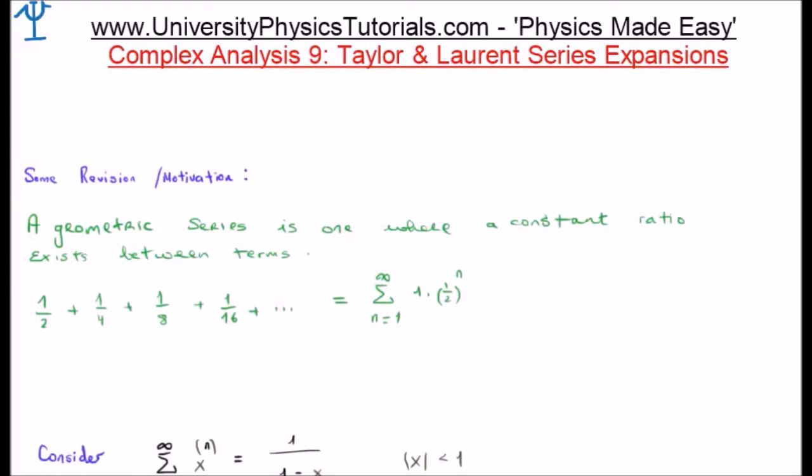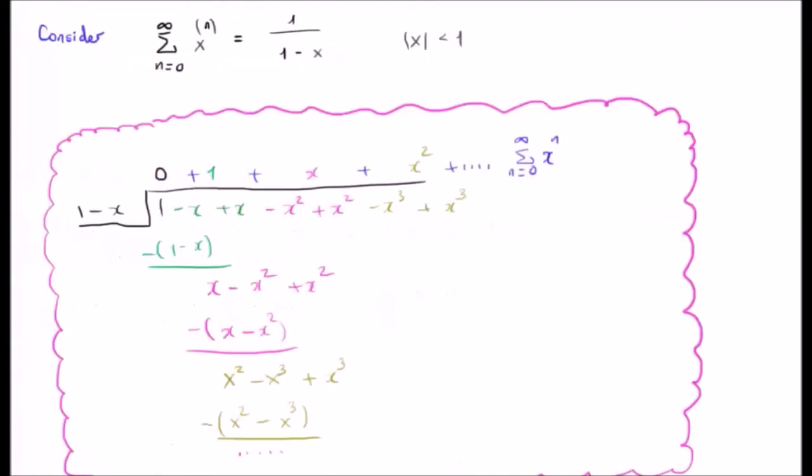Now let's build upon this a small bit. Consider the expression one over one minus x. It can be shown that this has a power series representation and that the power series representation is the infinite sum from zero to infinity of x to the n with a radius of convergence of the magnitude of x less than one. If you're not convinced of this, you can look at the division function on the rest of the screen. I'm not going to go through that though.